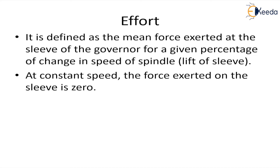When the governor is moving at a certain constant speed and it is in equilibrium, there is no requirement of force to be exerted on the sleeve. So the force being exerted on the sleeve in an equilibrium condition is zero. But when there is a certain change in speed — say the speed of the spindle increases by a certain amount — some force has to be exerted on the sleeve to lift it up or to move it to a new position. After moving to the new position, the governor comes to a certain equilibrium speed again and the force exerted becomes zero.